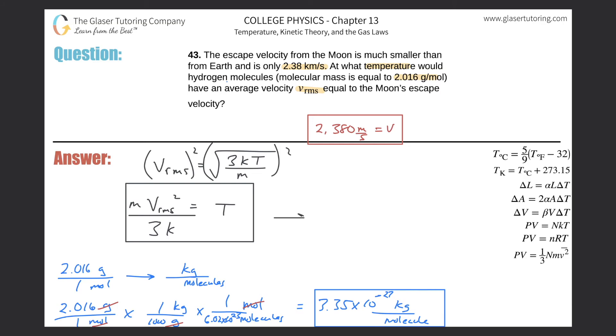Let's plug in the mass, which is going to be 3.35 times 10 to the minus 27th. The velocity was 2380, that's going to be squared, and then simply divide that by 3 multiplied by our Boltzmann constant of 1.38 times 10 to the minus 23. This is all equal to the temperature.